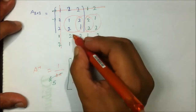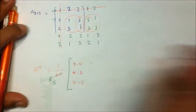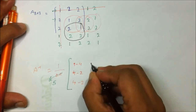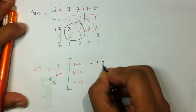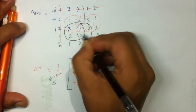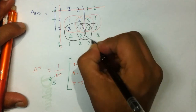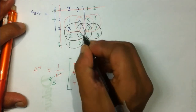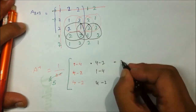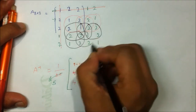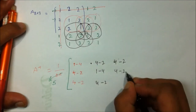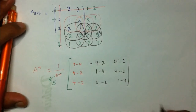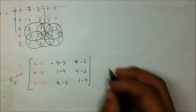Continuing with the second and third rows: the next element gives 2×2 − 2×2 = 4 − 2 = 2; then 1×1 − 2×2 = 1 − 4 = −3; then 4 − 2 = 2 again. For the last row: 2×2 − 2×2 = 4 − 2 = 2; 2×2 − 2×2 = 4 − 2 = 2; and 1×1 − 2×2 = 1 − 4 = −3.